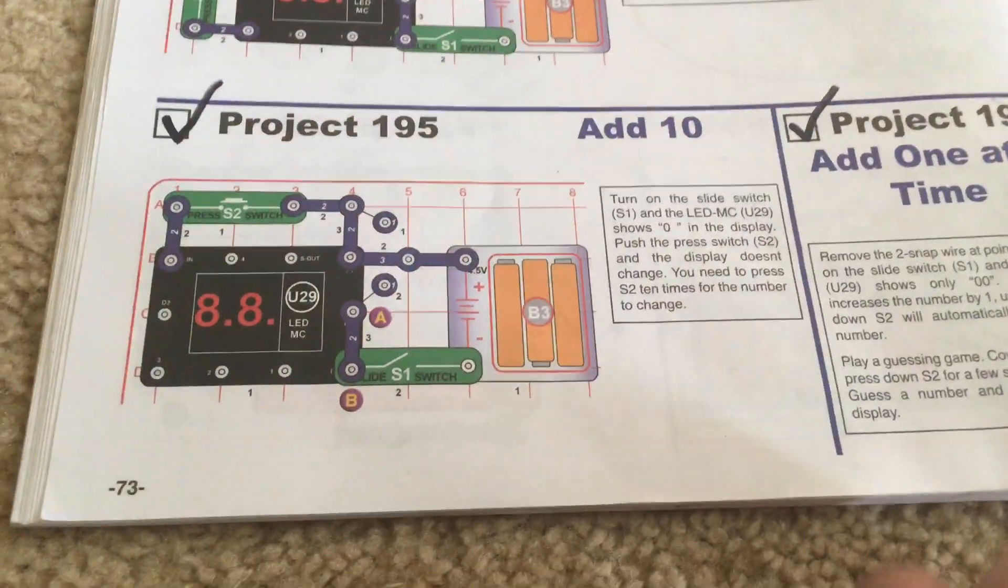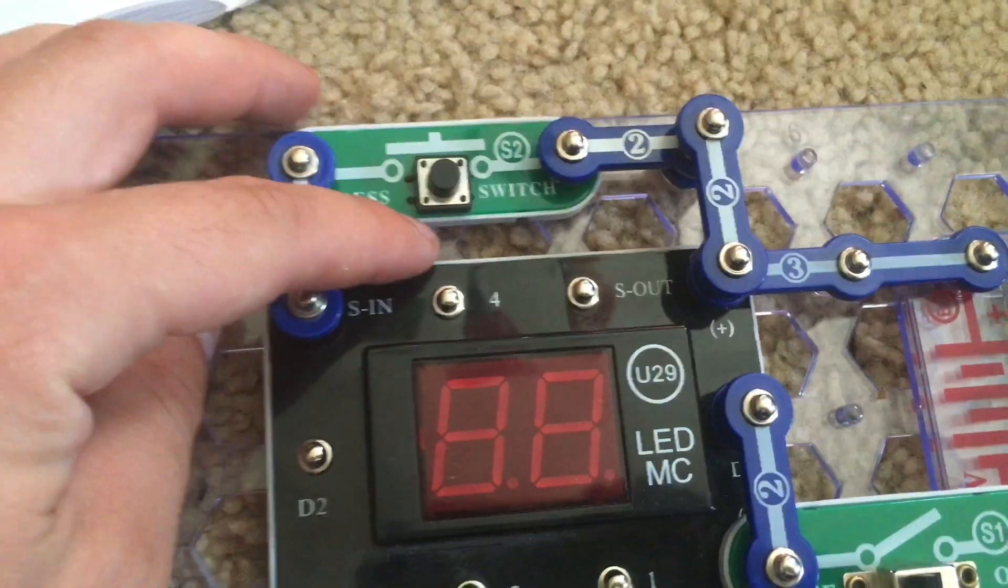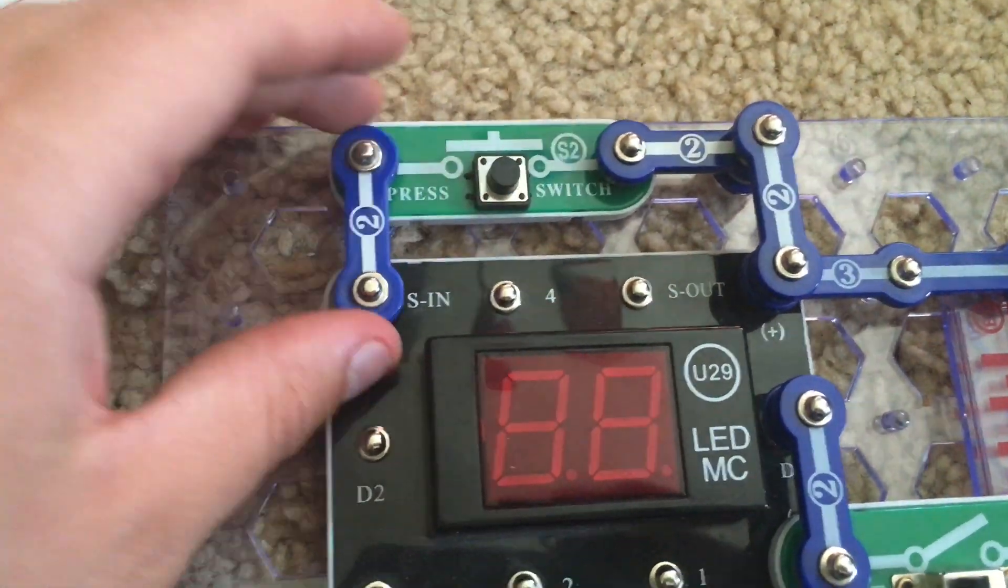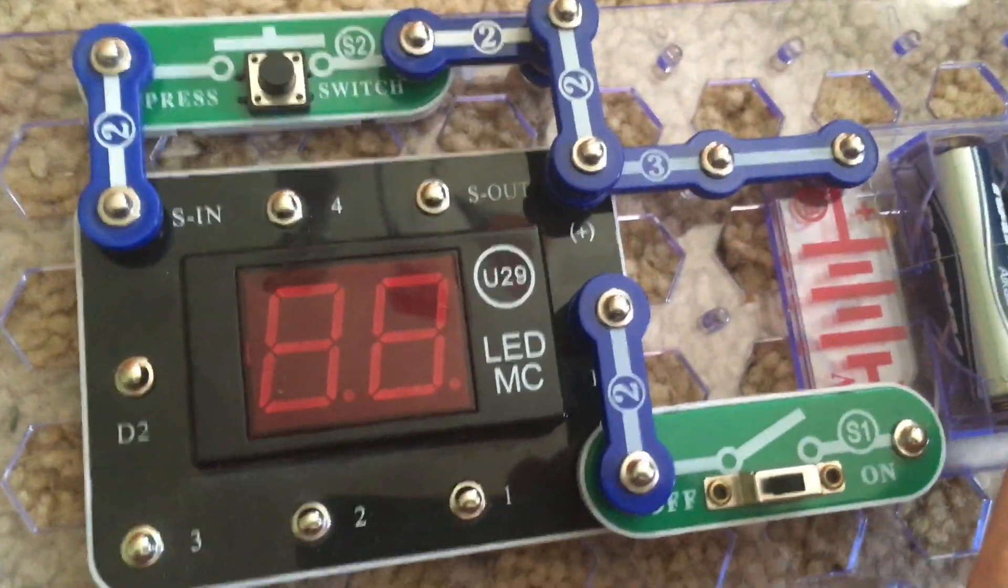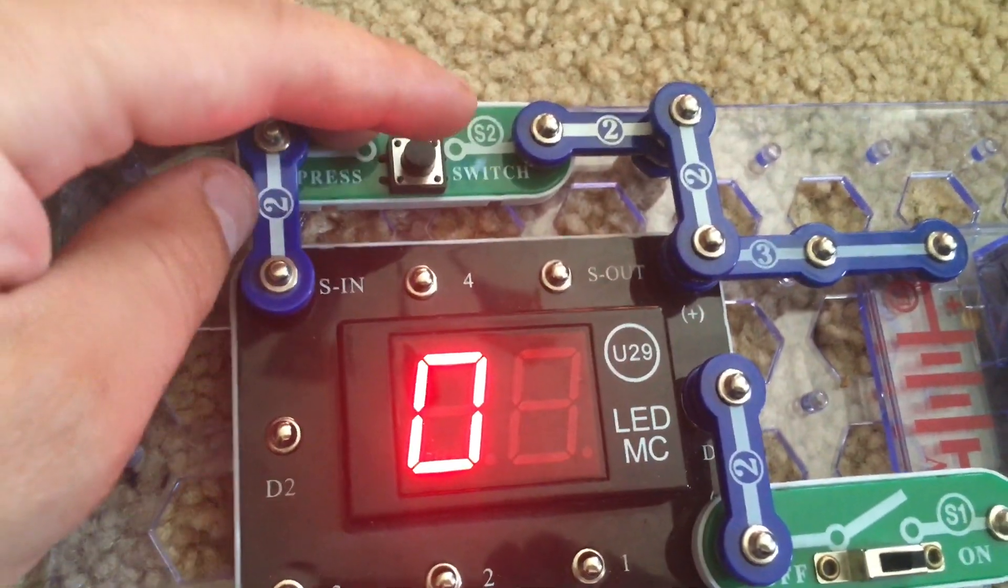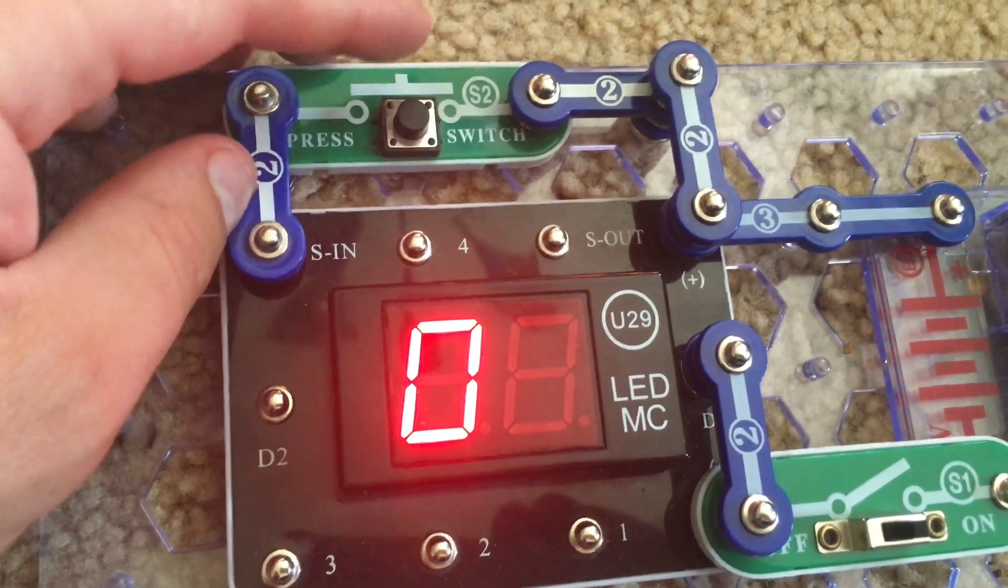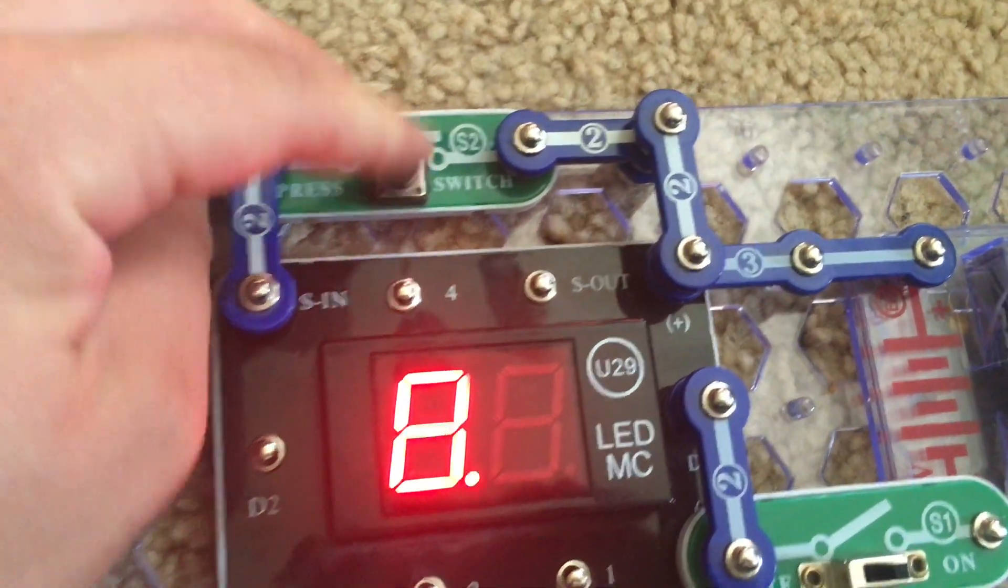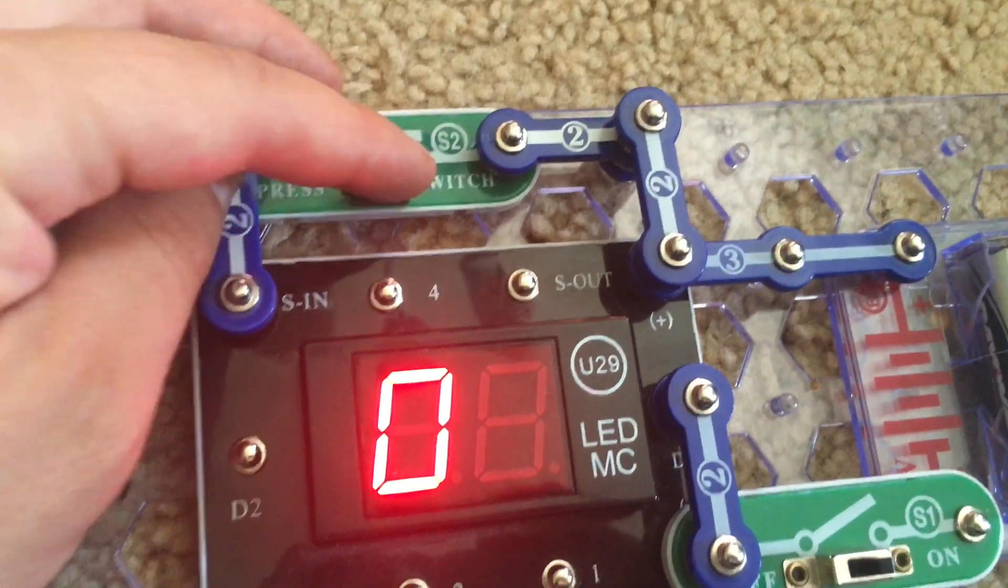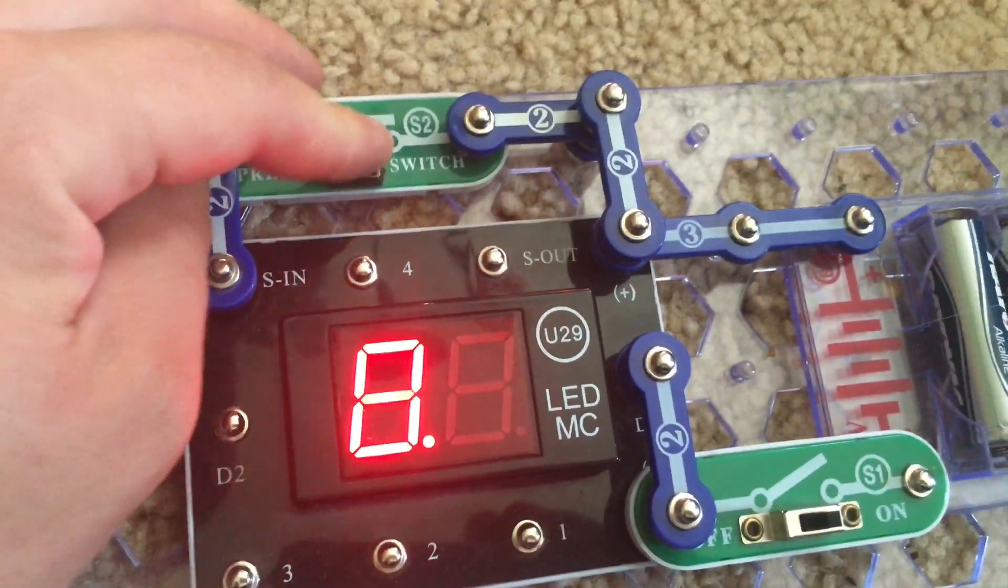Project 195 is add ten. I modified this circuit by moving the press switch above the U29 display rather than on the left. Turning on the slide switch will show the number zero on the tens digit. And when we push the press switch, nothing happens other than the display quickly lighting up fully.